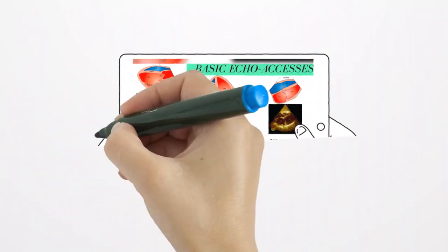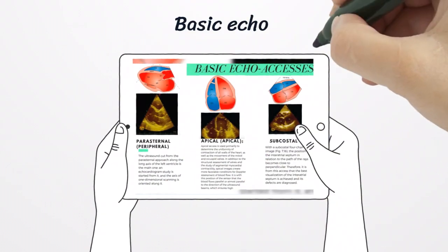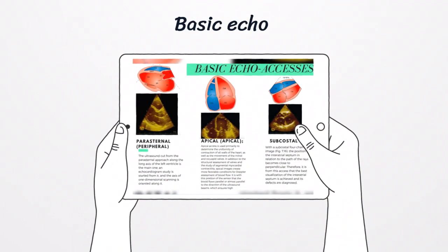And the next one, basic echocardiography will be different because it will be dependent on how we use, how we position our transducers, like parasternal, apical, and subcostal.